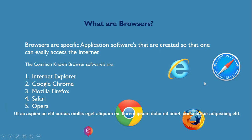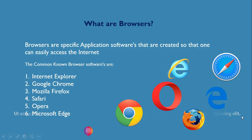Next we have Opera — this O logo here — which is also a good internet browser. Lastly we have Microsoft Edge — this E icon here. As you can see it looks similar to Internet Explorer; it is basically the updated version of Internet Explorer. It's fast and reliable.